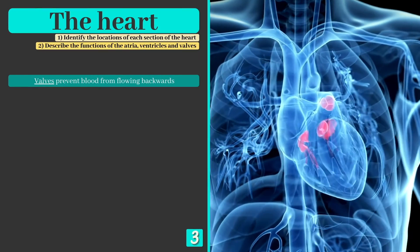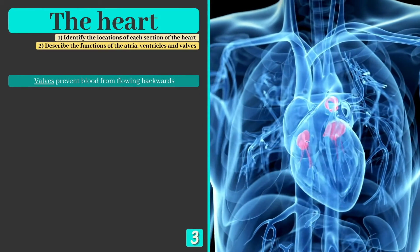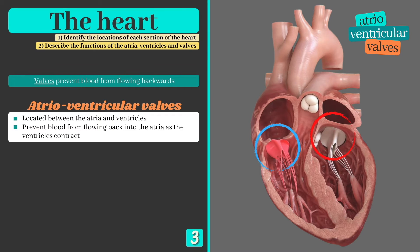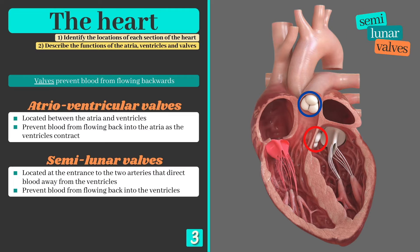Next we have the valves, which are important as they prevent blood from flowing backwards as the chambers contract. The two atrioventricular valves are located, as the name suggests, between the atria and the ventricles — they stop blood moving back into the atria as the ventricles contract. There are also two semilunar valves situated at the base of the major arteries that carry blood away from the heart, preventing blood that has just left the ventricles from flowing back in.